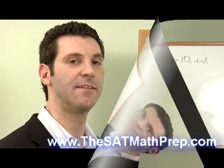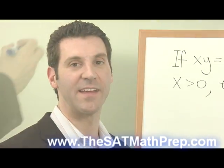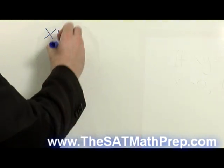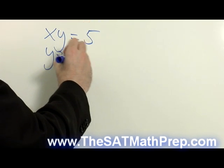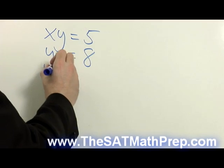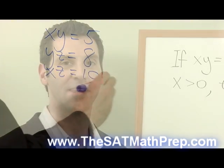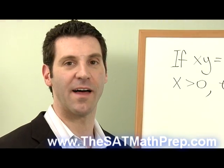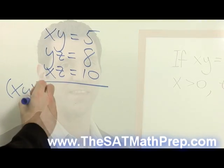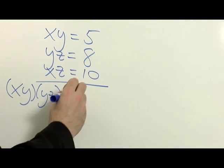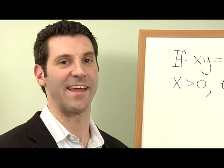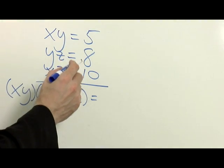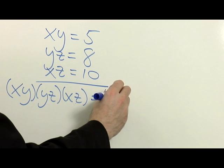Let's start by writing each of the three equations vertically. We now multiply each of the left-hand sides together, and we multiply each of the right-hand sides together. 5 times 8 times 10 is 400.